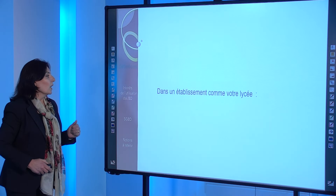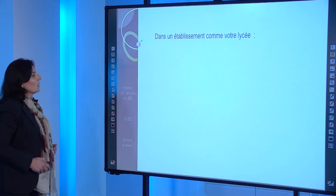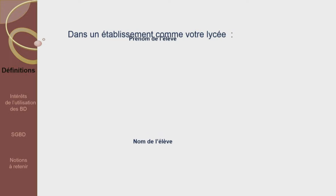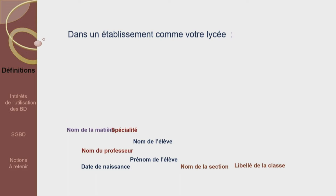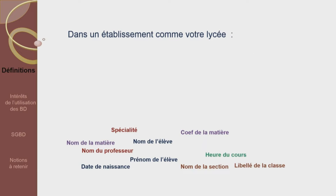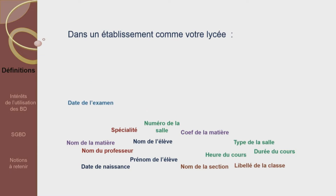Prenons par exemple un établissement comme votre lycée. Dans cet établissement, on connaît le nom de chaque élève, le prénom, la date de naissance, les élèves de chaque classe, les classes de chaque section, le nom de chaque professeur, sa spécialité, le nom de chaque matière enseignée, le coefficient de chaque matière pour chaque niveau et pour chaque section, l'heure de chaque cours, la durée de chaque cours, le numéro de chaque salle, le type de chaque salle, la date de chaque examen, l'heure de chaque examen et la note de chaque élève dans chaque examen.